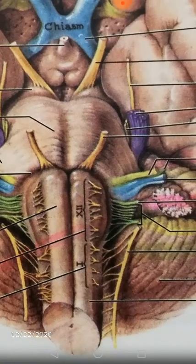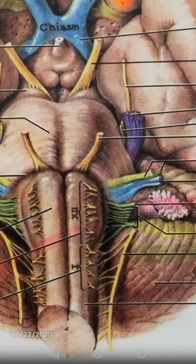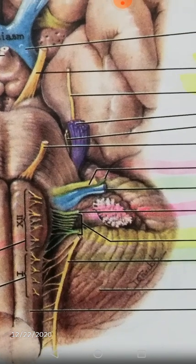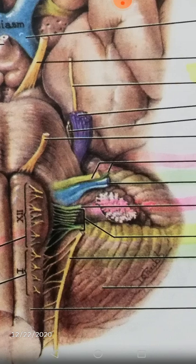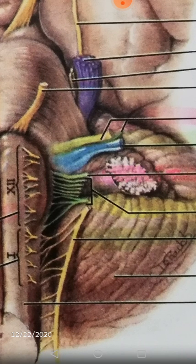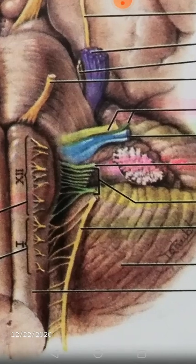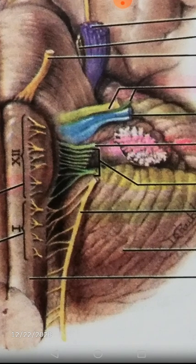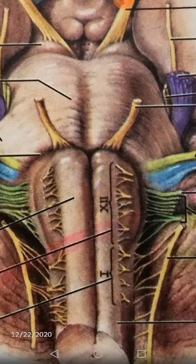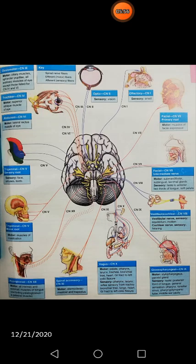On the lower border of the pons is the abducent nerve. At the junction of the medulla oblongata, the upper green nerve is the facial nerve, and the bluish nerve is the vestibulocochlear nerve. The thick upper green nerve is the glossopharyngeal, and the rootlets of green color are the vagus nerve. The yellowish nerve with many rootlets is the accessory nerve, the eleventh cranial nerve. The cut nerves on both sides of the pyramids are the hypoglossal nerves.